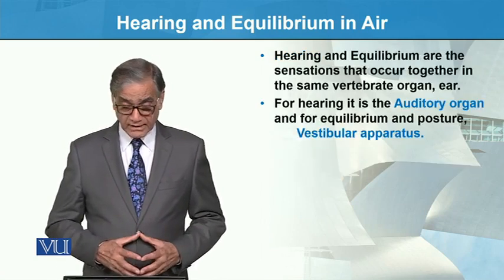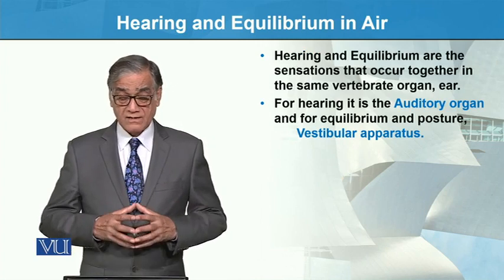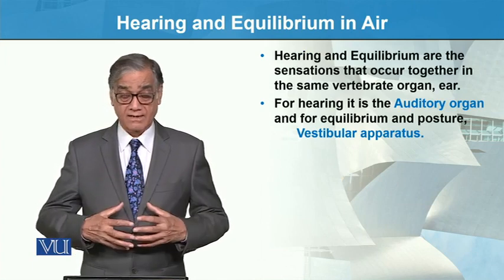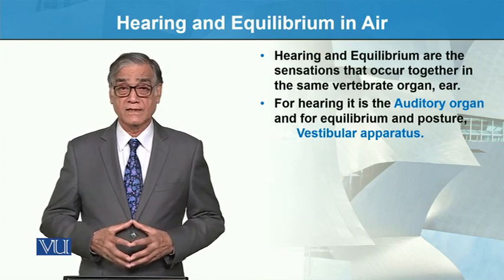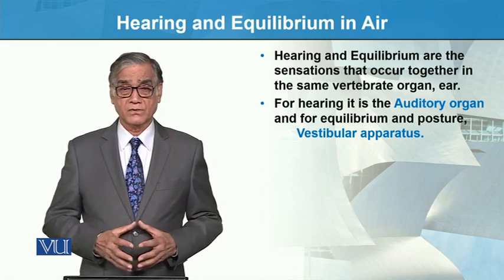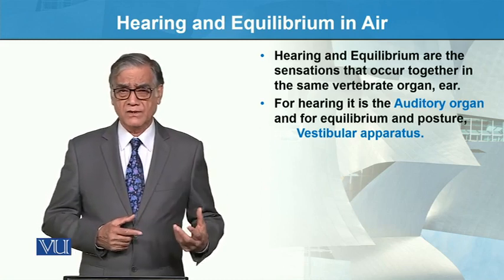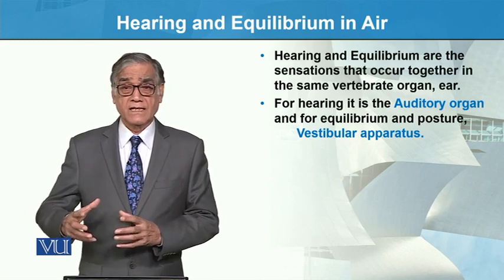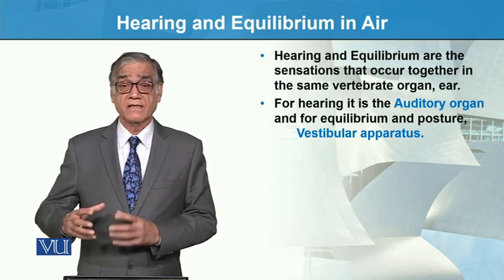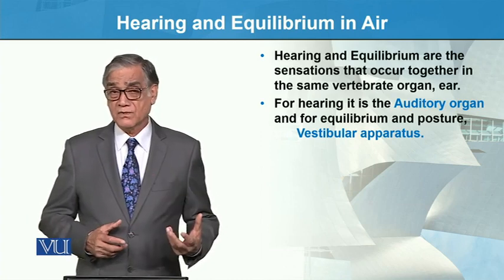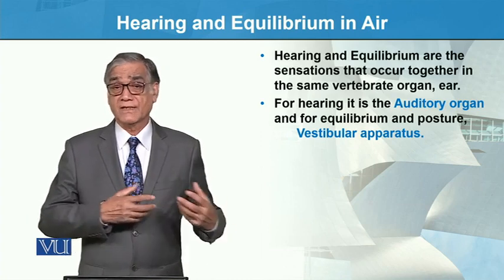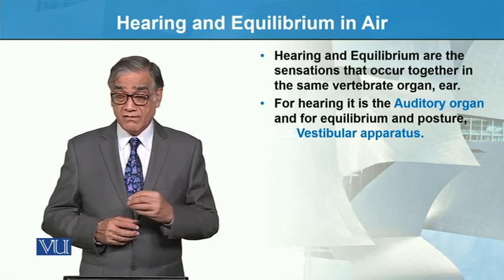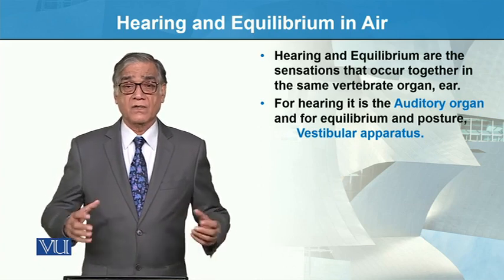Hearing and equilibrium are sensations that occur together in the same vertebrate organ — the ear. The ear has three parts we have already read about: the external ear, the middle ear, and the internal ear. The external ear directs vibrations, and the middle ear processes sound waves to the internal ear.